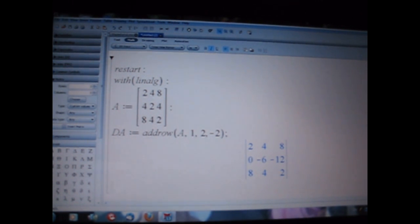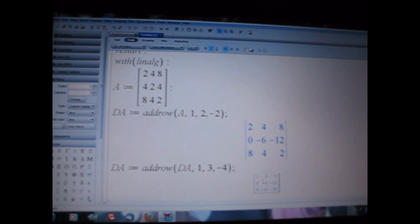Now we will go down and use DA again with add row. This time we are going to take this value of the matrix and manipulate it further. So we are going to take row one into row three minus four times.